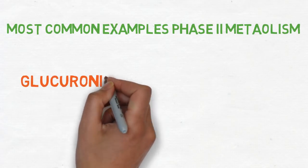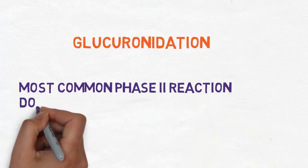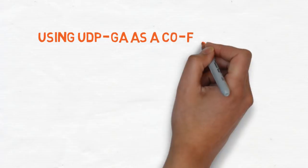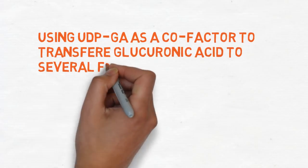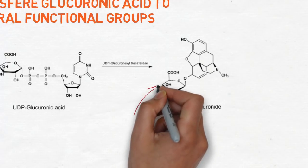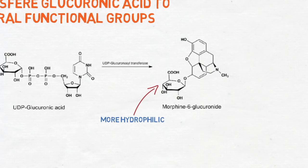The first phase 2 reaction example is glucuronidation, which is the most common phase 2 reaction. UDP-glucuronosyltransferase is the enzyme that uses UDPGA as a cofactor to transfer glucuronic acid to several functional groups, like hydroxyl, carboxylic acid, and hydroxylamines. The glucuronic acid adds a significant amount of hydrophilicity to the molecule, facilitating its excretion.